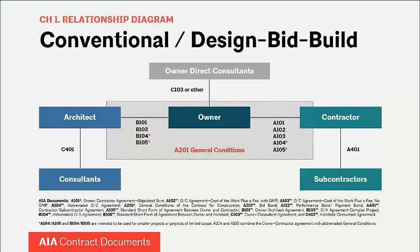Construction manager as constructor — also known as CMC, CM at risk, or CMR — uses the same A-201 general conditions for its construction phase. The A-201 is also the basis for general conditions used in shorter agreements for small projects, like the A-104 and A-105, as well as for other delivery methods including construction manager advisor and design-build. Even custom-written general conditions borrow significantly from A-201 concepts and language, often shifting responsibilities or risks between the parties.